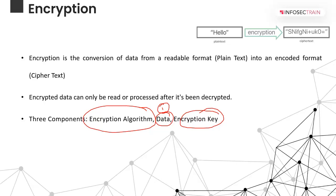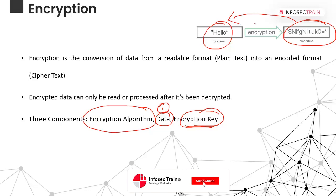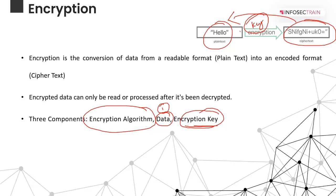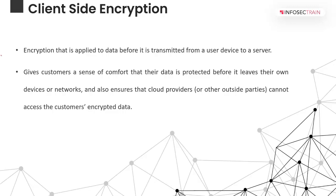The encryption algorithm generates a key file, and this key file is the most important component. If you want to convert the ciphertext back to normal data, the key file is mandatory. We have different types like symmetric encryption and asymmetric encryption, and different kinds of algorithms — we will discuss those in future lectures. For now, I want to tell you about the two main things: client-side encryption and server-side encryption.